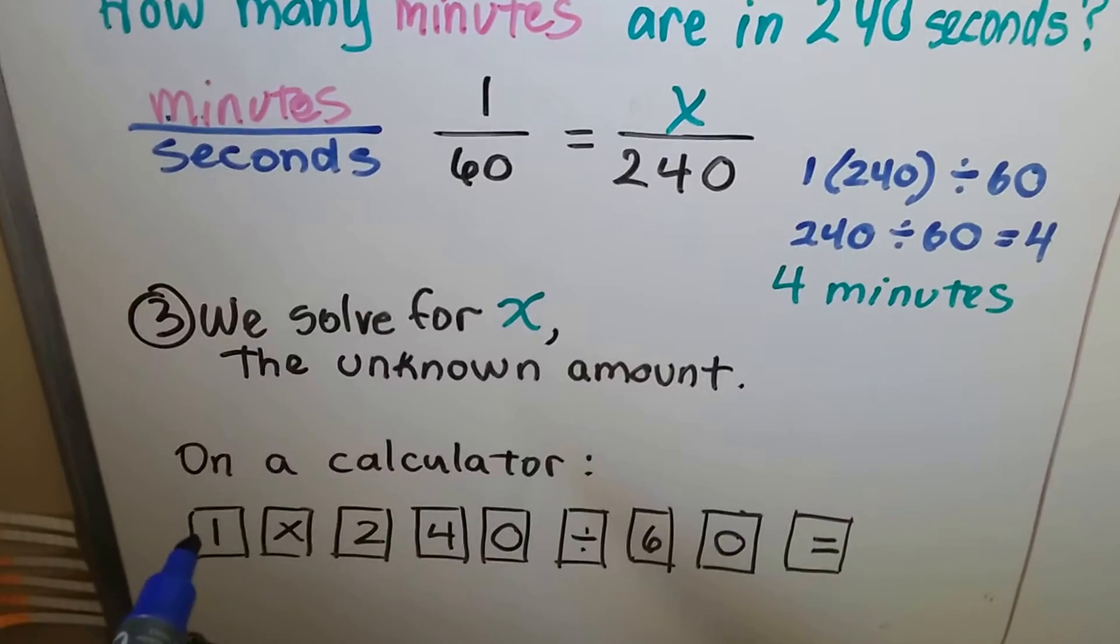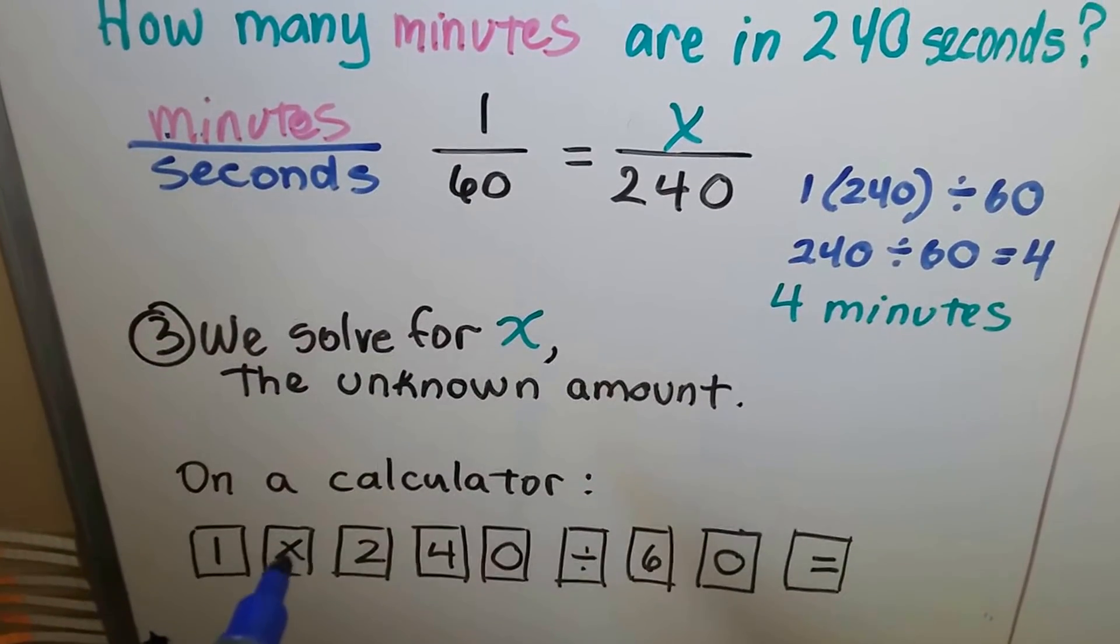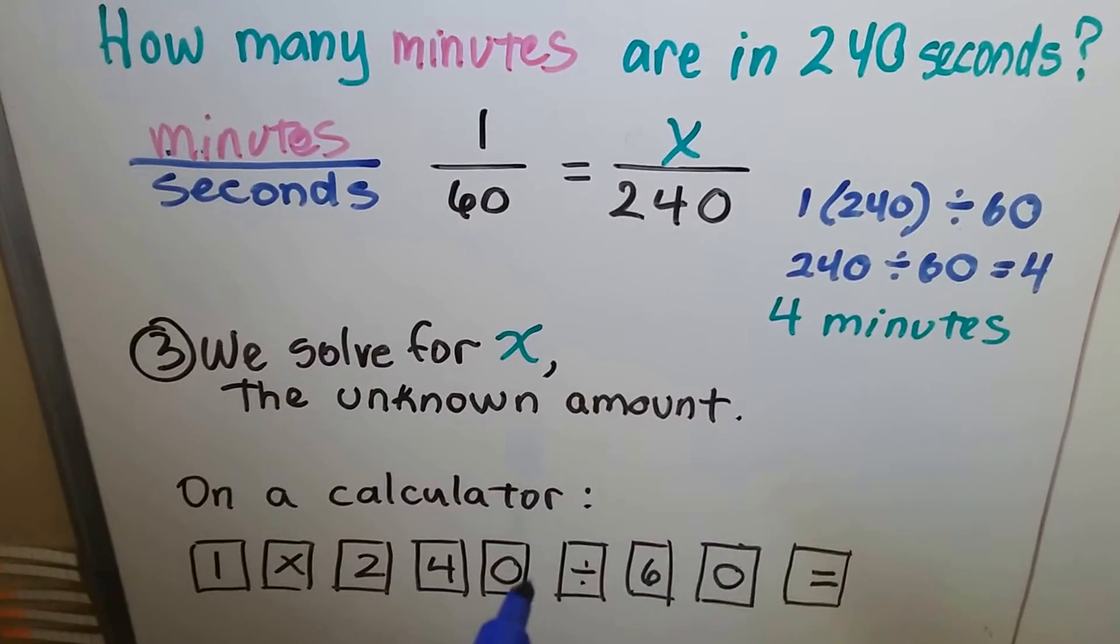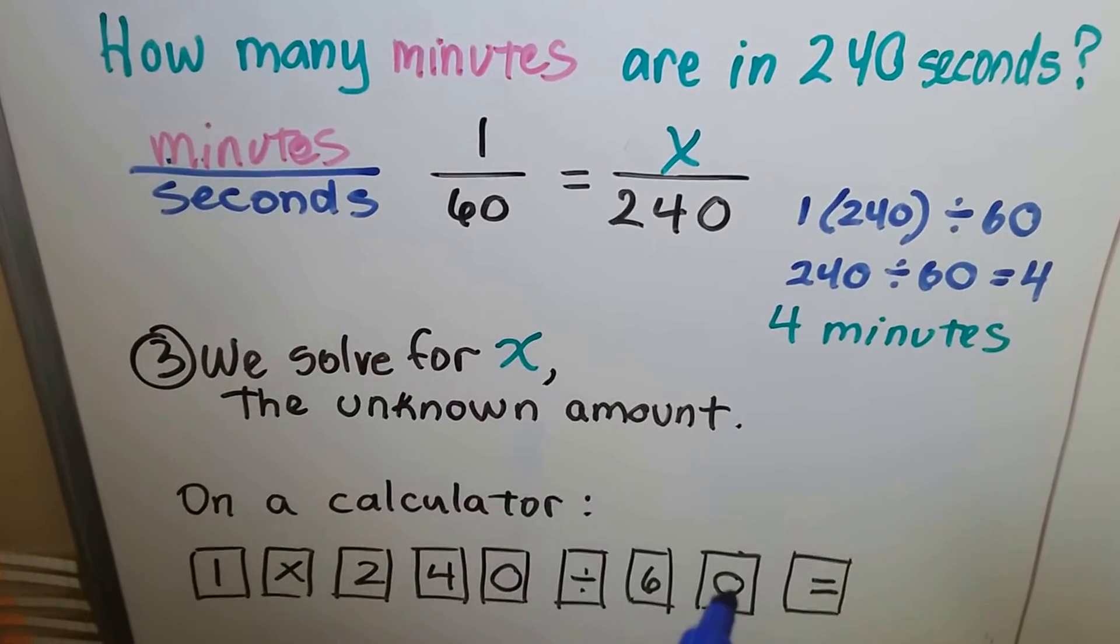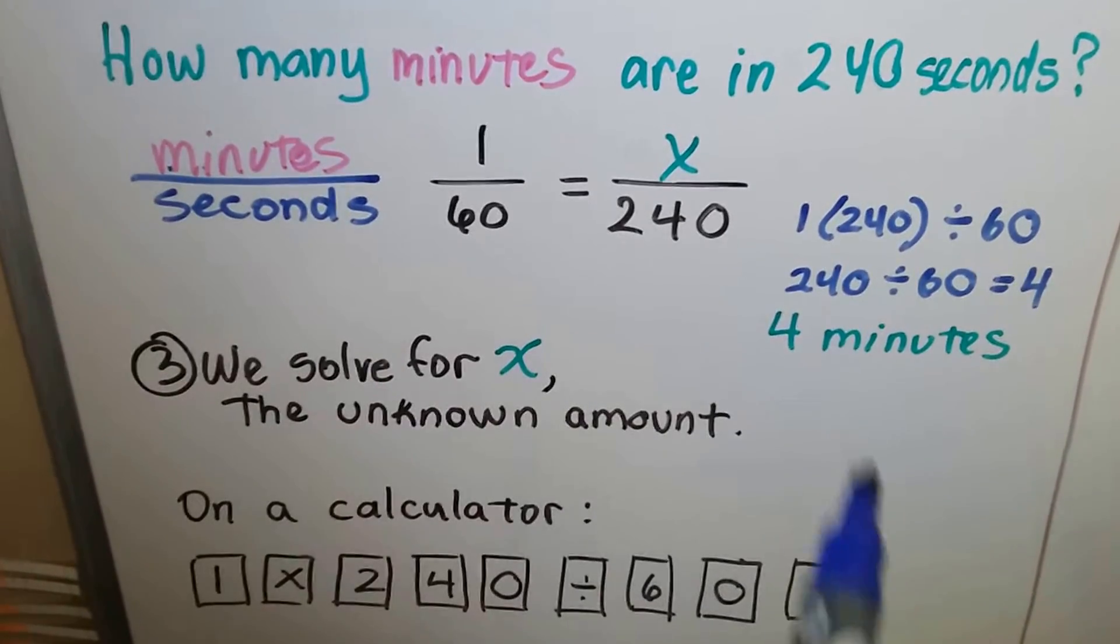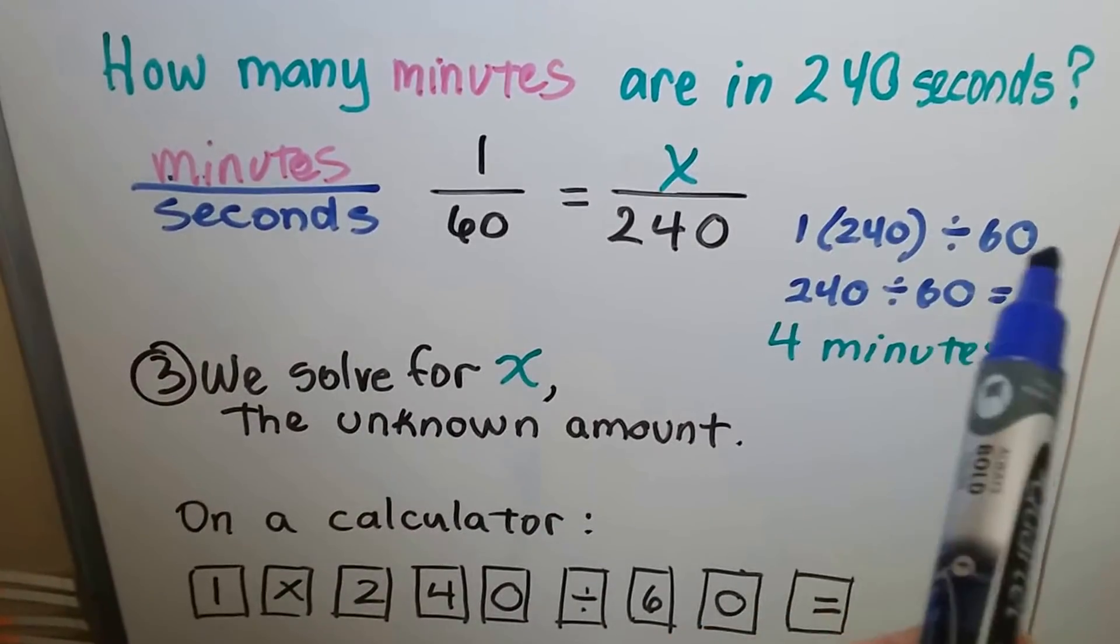On a calculator, you would just put in 1, multiplication sign, 2, 4, 0, division sign, 6, 0, equals. Pretty much just the way it's written here.